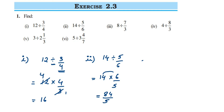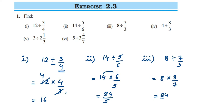Third one: we have 8 divided by 7/3. So 8 remains the same, division becomes multiplication, take the reciprocal of 7/3 which is 3/7. Can we cancel? No, in this case we cannot cancel. So multiply: 8 times 3 is 24, giving us 24/7.